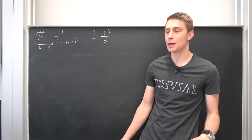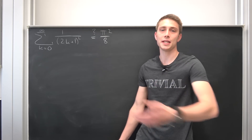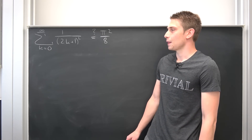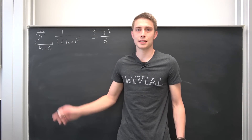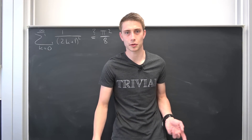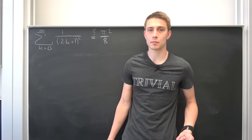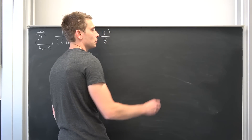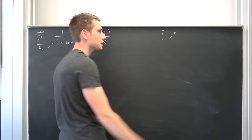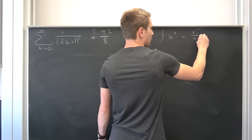This takes inspiration from my Basel problem integral representation on the unit square. I want to give some inspiration where this idea comes from. Take a look at the integral of x to the nth power. If you integrate this you're going to end up with x to the n plus 1 power over n plus 1.